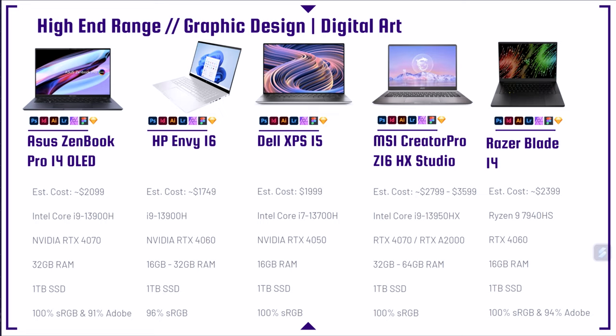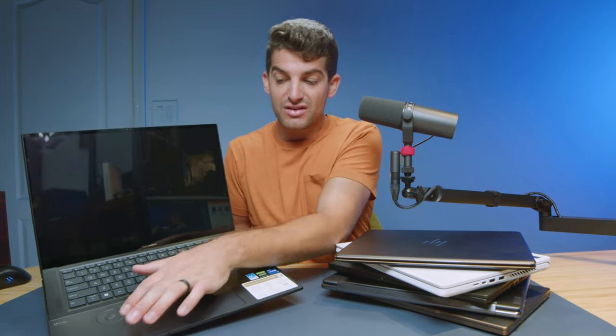Next would be the Asus ZenBook Pro 14 OLED — one of those more premium laptops for creators with performance. You can see we have the i9-13900H and the RTX 4070 with 32GB of RAM and 1TB of SSD, as well as 100% sRGB and 91% Adobe RGB, all at around the $2,000 price point — a really good price for this laptop. They also have a 16-inch model with a dial on the top of the keyboard deck, a large glass trackpad, and a keyboard that elevates off the deck to make it more ergonomic, plus an OLED display. Whether you're getting the 16-inch or the 14-inch, the ZenBook Pro series is fantastic.